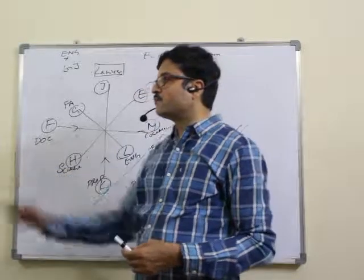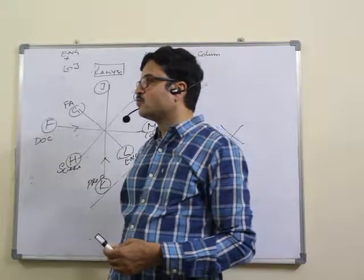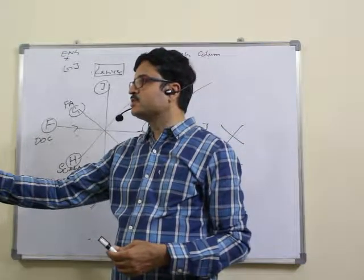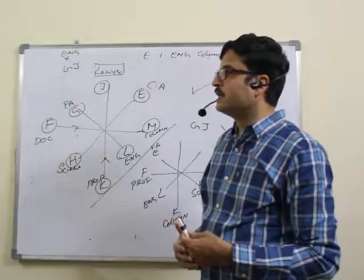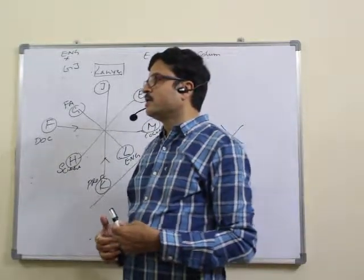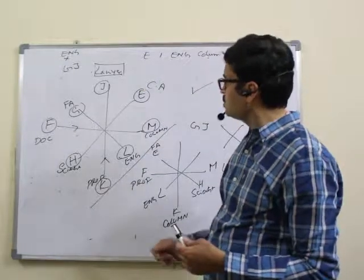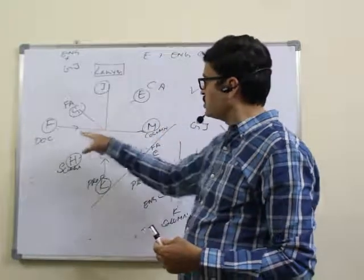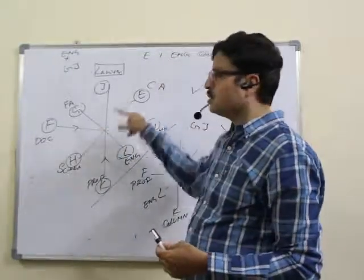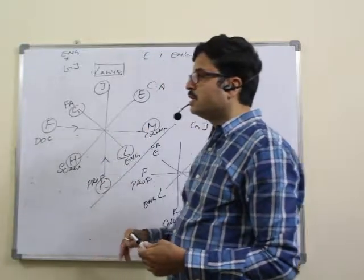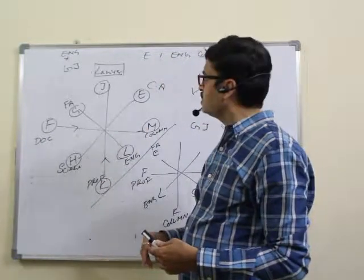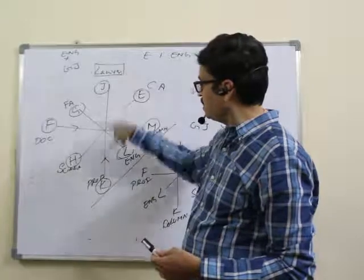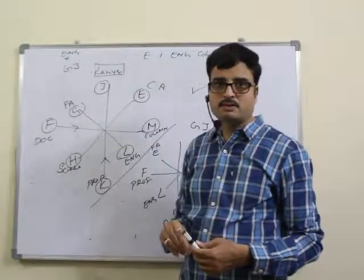Question 62: who is the professor? K is professor. Answer: 62, third option. Question 63: four of the following five are alike in a certain way — find the odd one out. Chartered accountant and H are opposite — correct. M and doctor are opposite — correct. J and engineer — that is wrong. Financial analyst and L — correct. Lawyer K — correct. So the odd one is J-engineer. Answer: 63, third option.